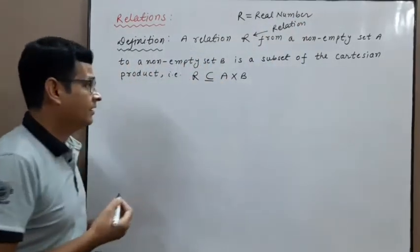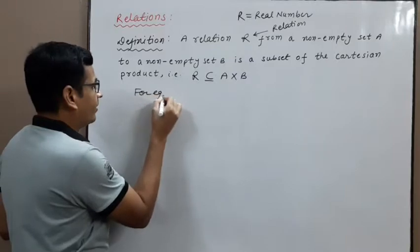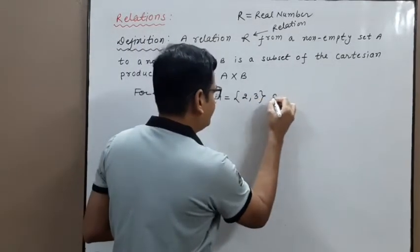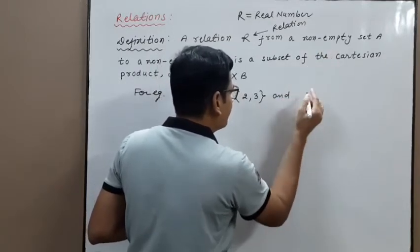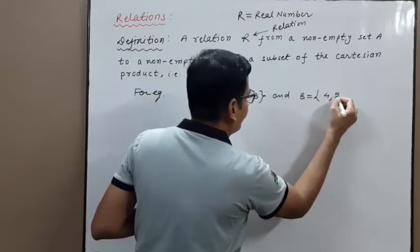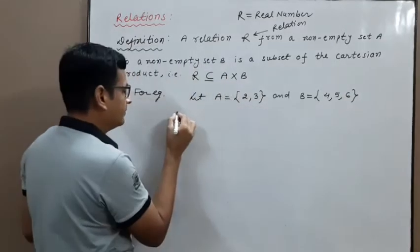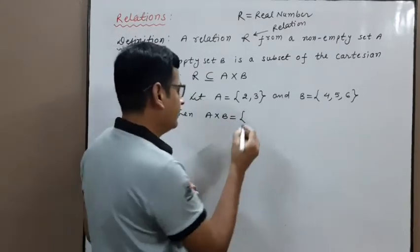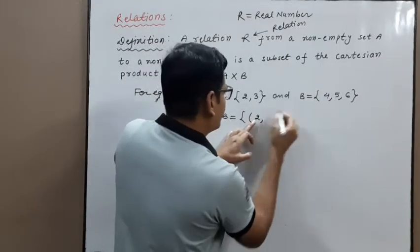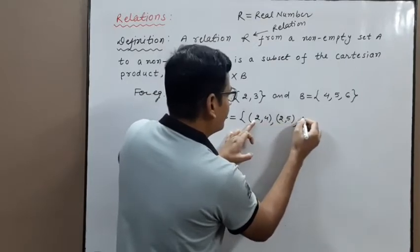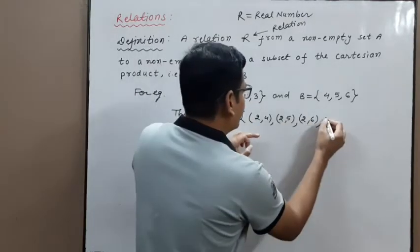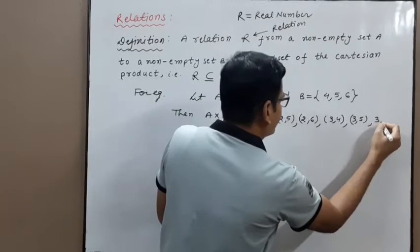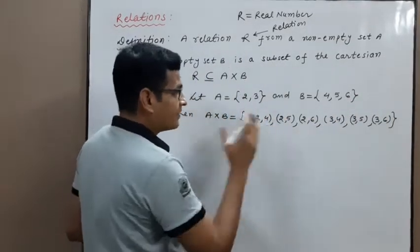For example, let A equal to {2, 3} and B equal to {4, 5, 6}. Then A cross B is the set of ordered pairs where the first element belongs to the first set and the second to the second set: (2,4), (2,5), (2,6), (3,4), (3,5), (3,6). There are six ordered pairs.